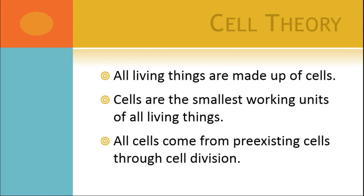All living things are made up of cells, and cells are the smallest bits of life that you can get. A cell is the smallest living thing — anything smaller than a cell is not alive; you just have parts of a cell or something completely different. And cells don't just come out of nowhere: you have to have a cell that divides, and that is how you get new cells from pre-existing cells.